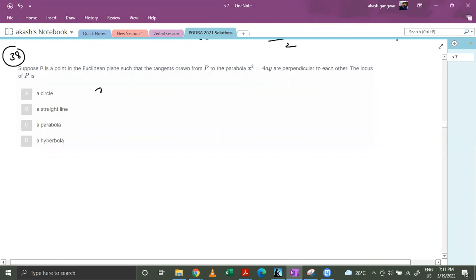So the given parabola is x square equals to 4ay. Let's draw that parabola.